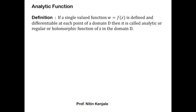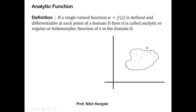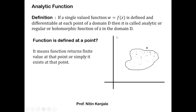Now let me explain what is meant by a function being defined and differentiable at each point of a domain D. Assume this is the domain D of that function. When we say f(z) is defined at every point in that domain, it means for every point in D, f(z) takes a finite value, or simply it exists at that particular point. So if f(z) exists at every point in this domain D, then we call it f(z) is defined in this domain D.